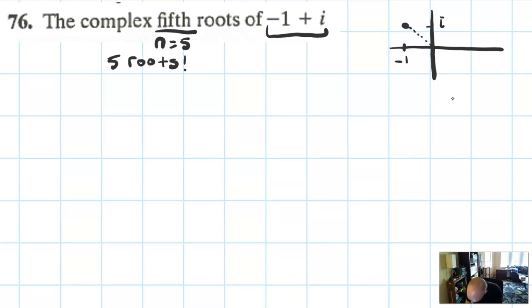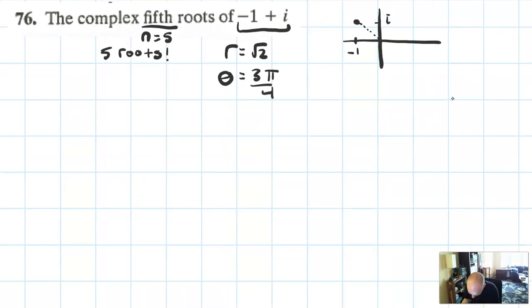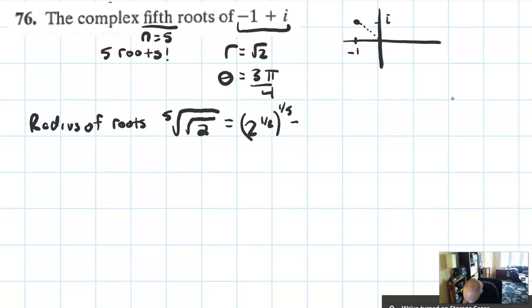So this number looks like this. This would have a radius of square root of 2, and it would have an angle of 3π over 4. I'm going to put this one back in radians. The last one was nice in degrees, but I think it's better to stay in radians. The first thing I notice is that the radius of the root is going to be the fifth root of the square root of 2. Please don't leave your answer like this. I would write it as 2 to the 1 half to the 1 fifth, or 2 to the 1 tenth is how I would probably go about writing that out. Or if I wanted to be really fancy, I would write it as the tenth root of 2.